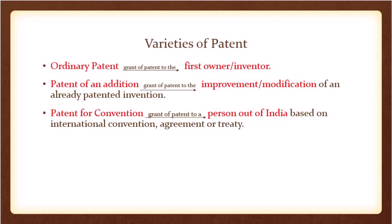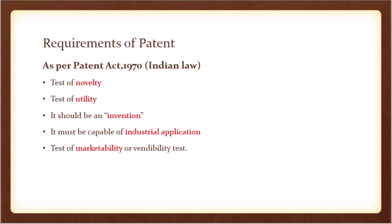Varieties of patent: First, ordinary patent — it is grant of patent to the first owner or inventor. Second, patent of addition — it is grant of patent to the improvement or modification of an already patented invention. Third, patent for convention — it is grant of patent to a person outside India based on an international convention, agreement, or treaty.